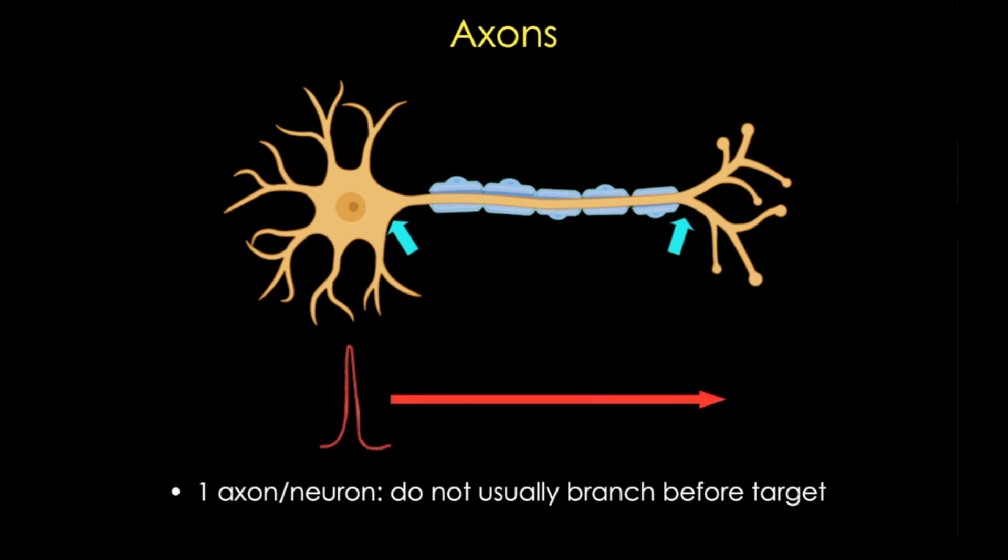Axons can be short or very long, and that depends on where the signal needs to go. A neuron that needs to send signals to the lower spinal cord might be up to one meter long. And most neurons have only one axon, although there are exceptions.